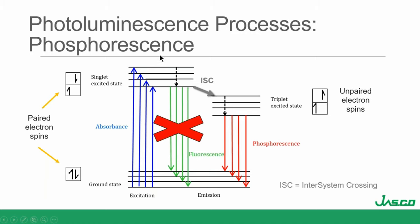So, if all things fall into place and we have the right molecular structures that allow for the overlap of the singlet and triplet states, and we can radiatively decay to the ground state, then we get phosphorescence.